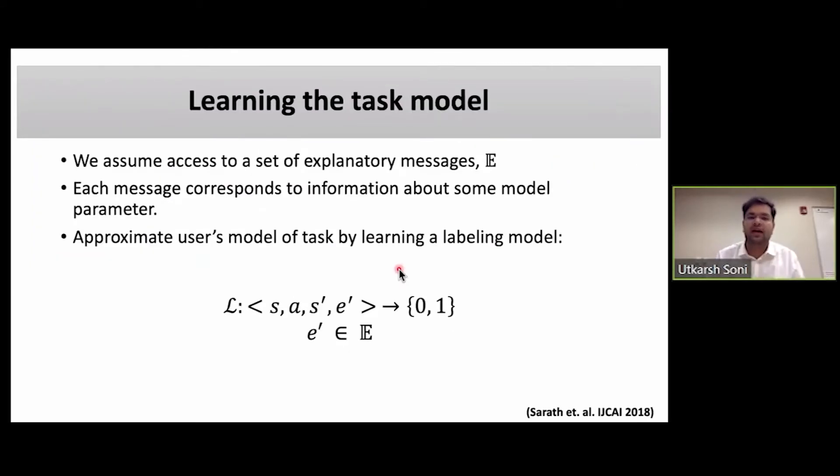Before going into that, I wanted to mention how we learned the user's task model or a type of user's task model. For that we assume access to a set of explanatory messages E, where each message corresponds to some information about the robot's model parameter. We approximate the user's model of the task by learning a labeling function that maps a tuple (s, a, s', e') to {0, 1}, where one means that given these messages, this transition would be explicable to the user. This was taken from work by Sarat et al. from HCAI 2018.